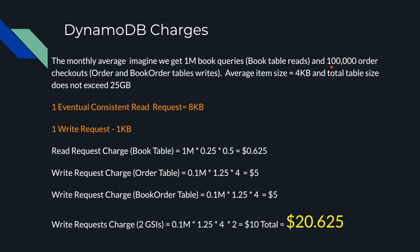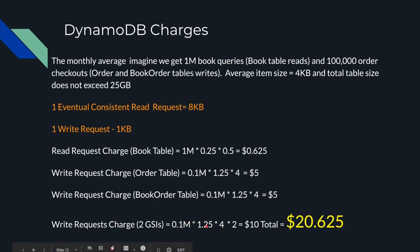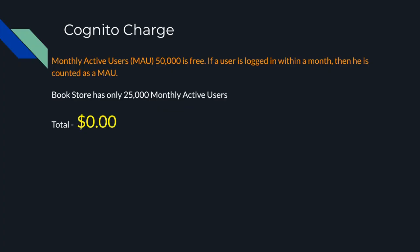For writing to the order table: we have 100,000 orders, which is 0.1 million. For 1 million writes it costs $1.25, and our payload is about 4 KB, so we multiply by 4 — that's $0.50 for the order table. You'll also be writing to a book-order table, a similar calculation giving another $0.50. Don't forget GSIs: we have two GSIs, and each operates as a separate table, so you must calculate the same write costs. That's 0.1 million × $1.25 × 4 × 2 = $10. In total, DynamoDB costs approximately $20 — though these are rough estimates depending on actual item sizes.